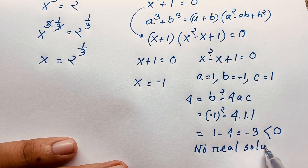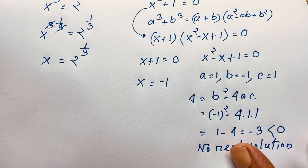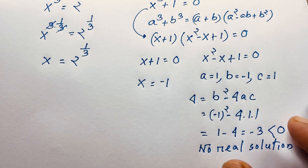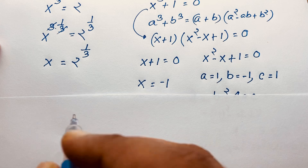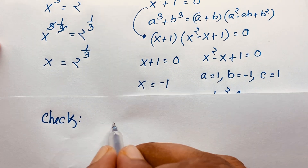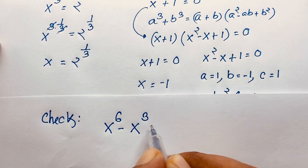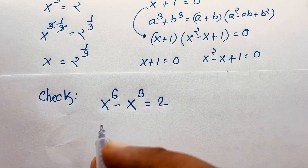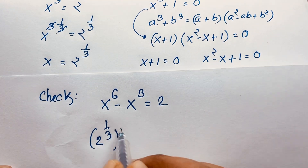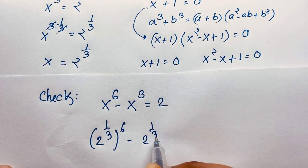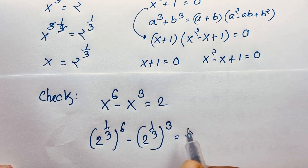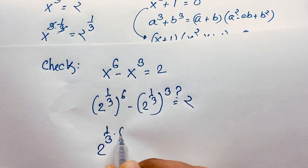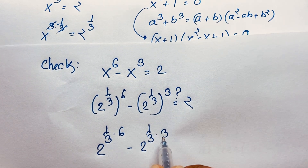No real solution from that case. We need real solutions. So our real solutions are x is equal to 2 to the power 1 over 3, and x is equal to minus 1. Let's verify — check: x to the power 6 minus x to the power 3 is equal to 2. Since x is equal to 2 to the power 1 over 3, I put this in: 2 to the power 1 over 3, whole to the power 6, minus 2 to the power 1 over 3, whole to the power 3, is equal to 2. According to the exponential formula, this times this gives 2 to the power 1 over 3 times 6, minus 2 to the power 1 over 3 times 3, is equal to 2.